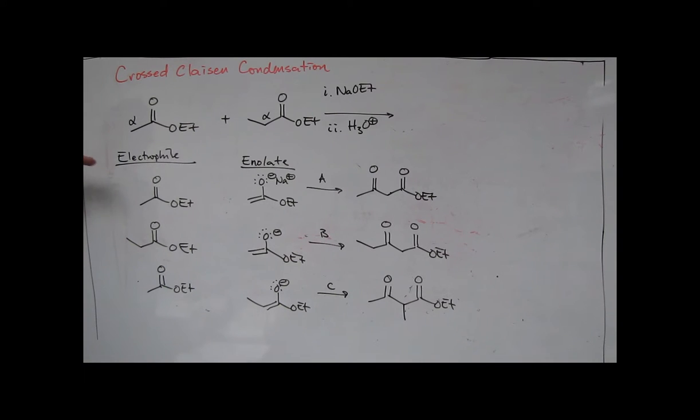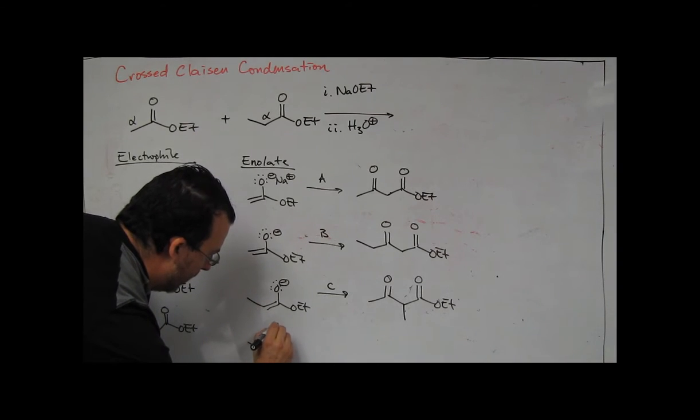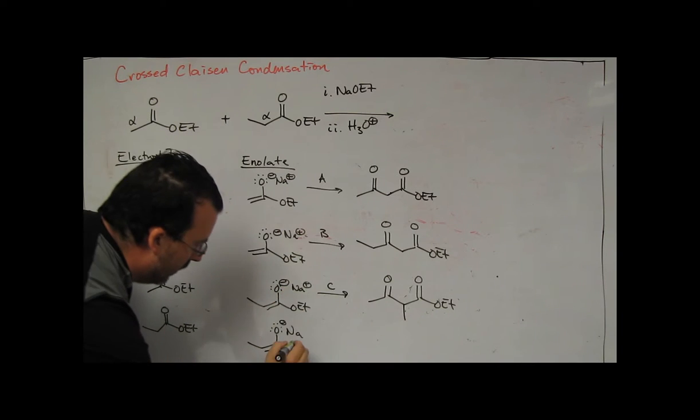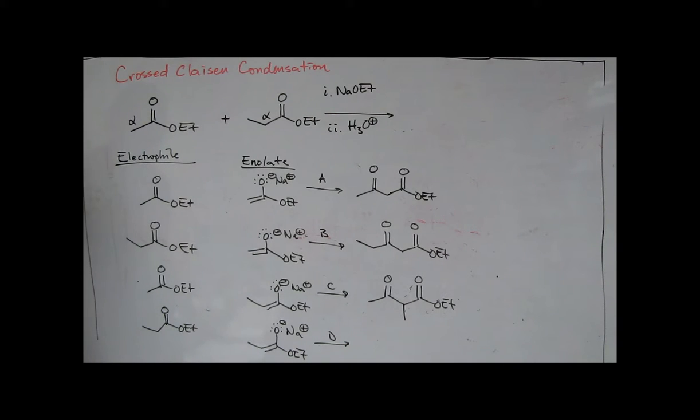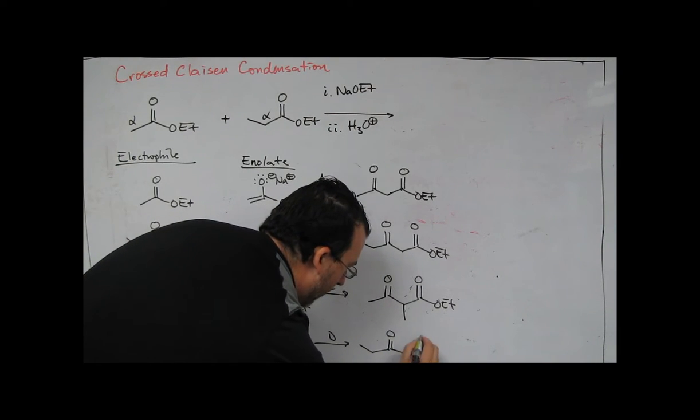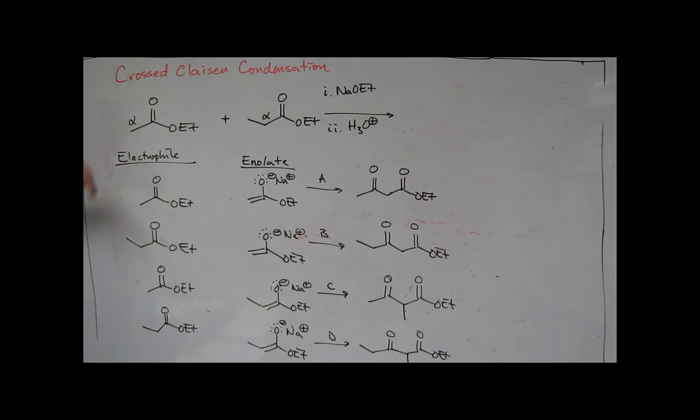And finally, we've done self-condensation, crossed condensation, crossed condensation. The last possible example is a self-condensation of the ethyl propanoate with its own enolate. So we're keeping that enolate the same in this example as well. We want to balance our charge here with the sodium. And we're going to call this product D. So now we extend that chain. This is still going to have a methyl group. So we've formed four possible products.